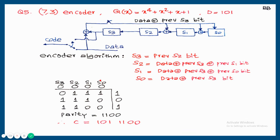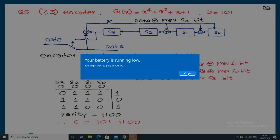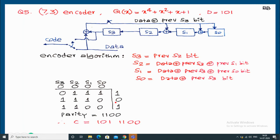Initially S3, S2, S1, S0 are all 0. The given data is 101. Applying the algorithm: S3 = previous S2 = 0. S2 = data + previous S3 + previous S1 = 1 + 0 + 0 = 1. S1 = data + previous S3 + previous S0 = 1 + 0 + 0 = 1. S0 = data + previous S3 = 1 + 0 = 1. Continuing through all data bits, the final parity bits are 1, 1, 0, 0, giving the output code 1, 0, 1, 1, 1, 0, 0.